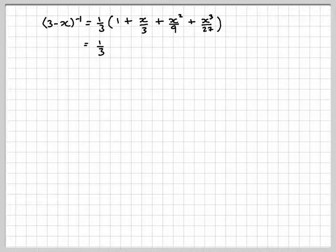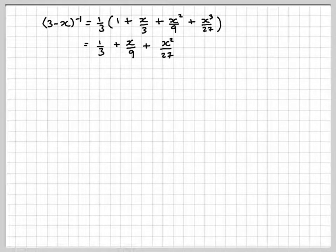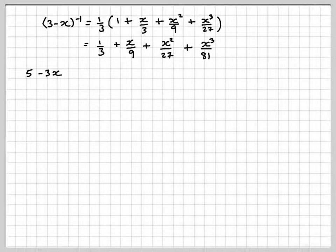Multiplying through by 1 third, we get 1 third plus x over 9 plus x squared over 27 plus x cubed over 81. So now what we've got to do is put it together.